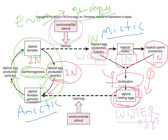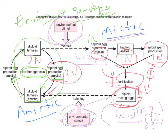This is the mixis phase of the life cycle, involving sexual reproduction. The resting eggs can persist through winter — when it's cold or dry — and when the environment improves in spring, positive environmental stimuli trigger hatching. The resting eggs hatch into diploid females, which may then undergo the amictic cycle until the next season, when environmental stimuli again cause them to produce haploid eggs through meiosis.